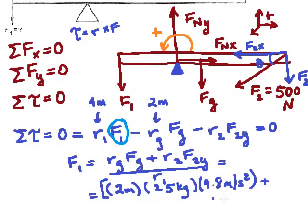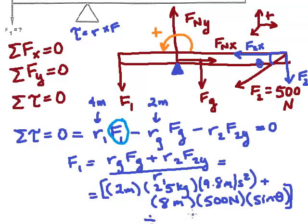Fg is 25 kilograms times 9.8 meters per second squared plus R2, which is 8 meters, times F2y, which will be F2, which is 500 Newtons, times sine of theta. And then we're going to take all of this and divide it by R1, which is 4 meters.